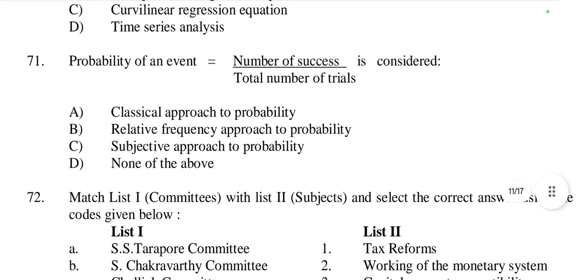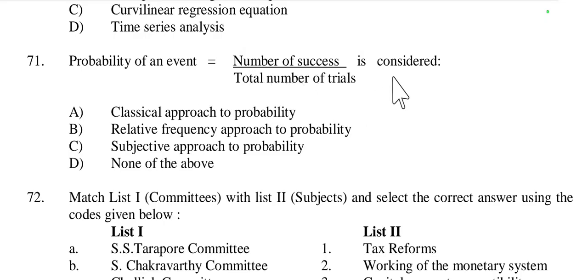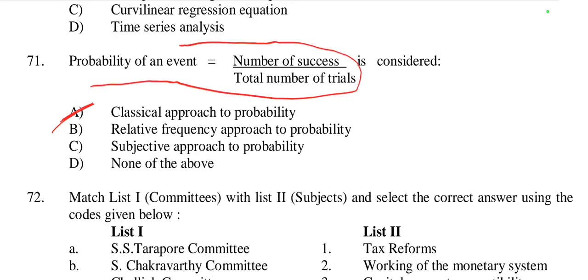Question 71: Probability of an event equal to the number of successes divided by the number of trials — this is considered the classical approach of probability. It is called the classical approach because probability of an event equals number of successes by number of trials.